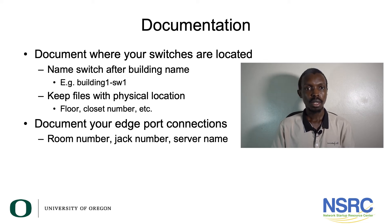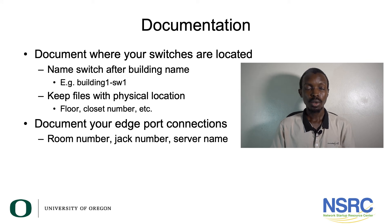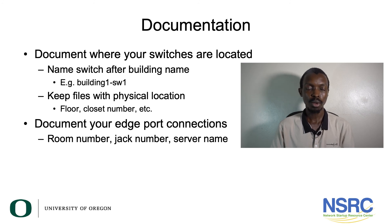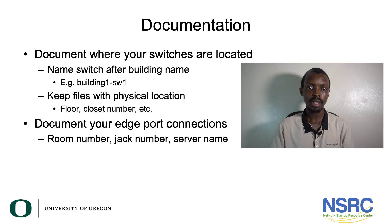You also want to document what is connected to the different ports — what room number, what jack number, what server name. You can document this in multiple ways: the physical location files could include documentation of what each port is connected to, and you can use interface descriptions, since most vendors will allow you to put a description on each port to indicate what is connected there. Whichever method you use, you need to keep the documentation current — when something changes, somebody needs to go and update it.